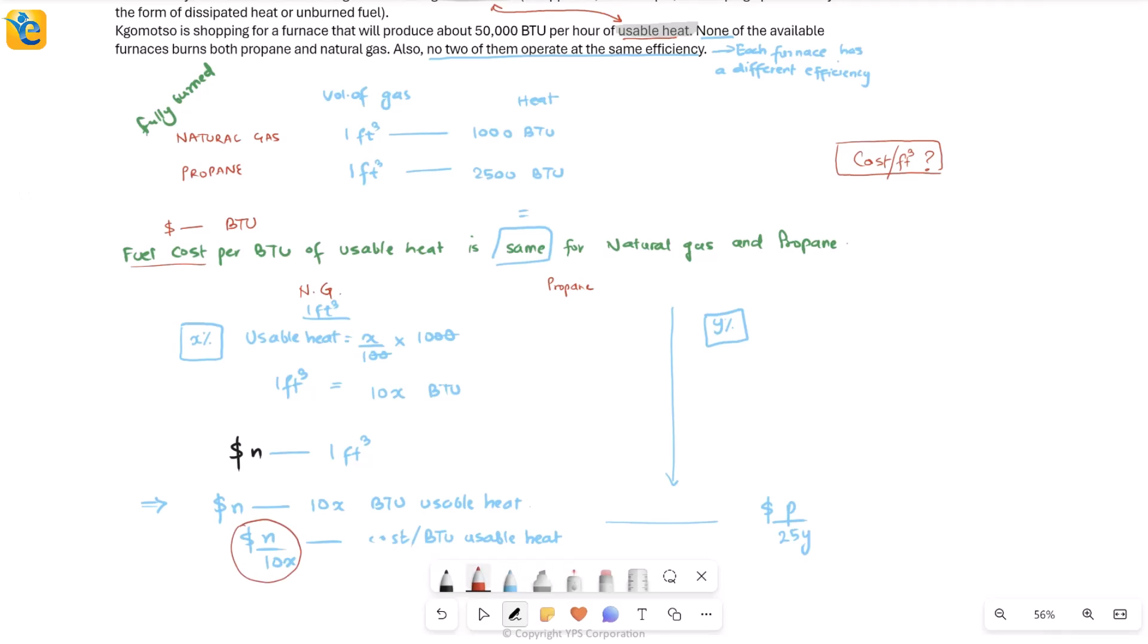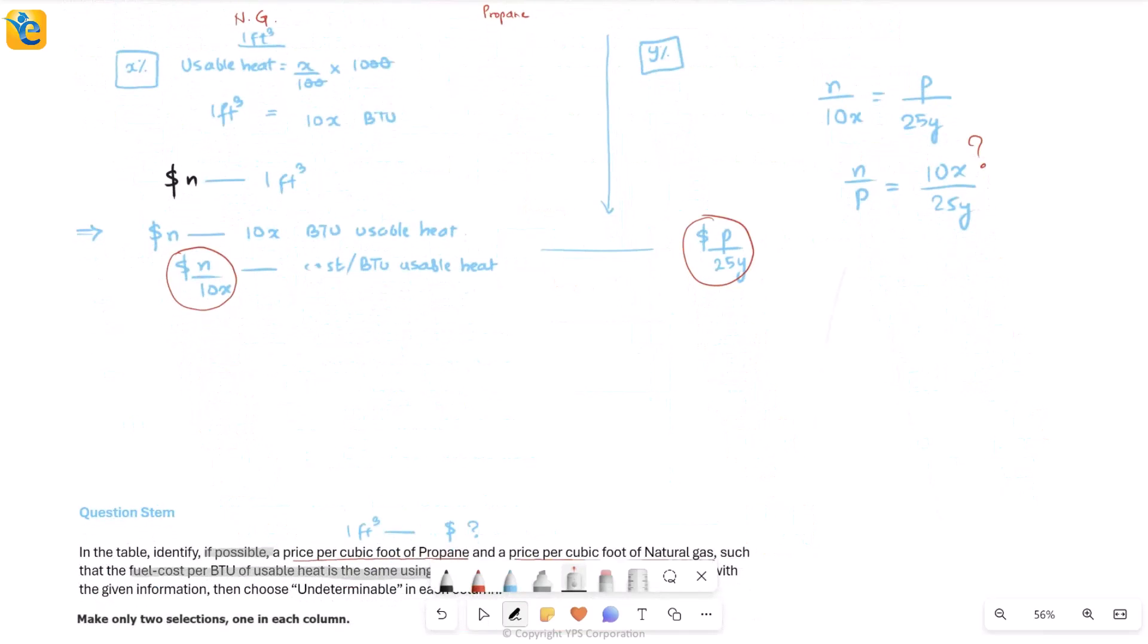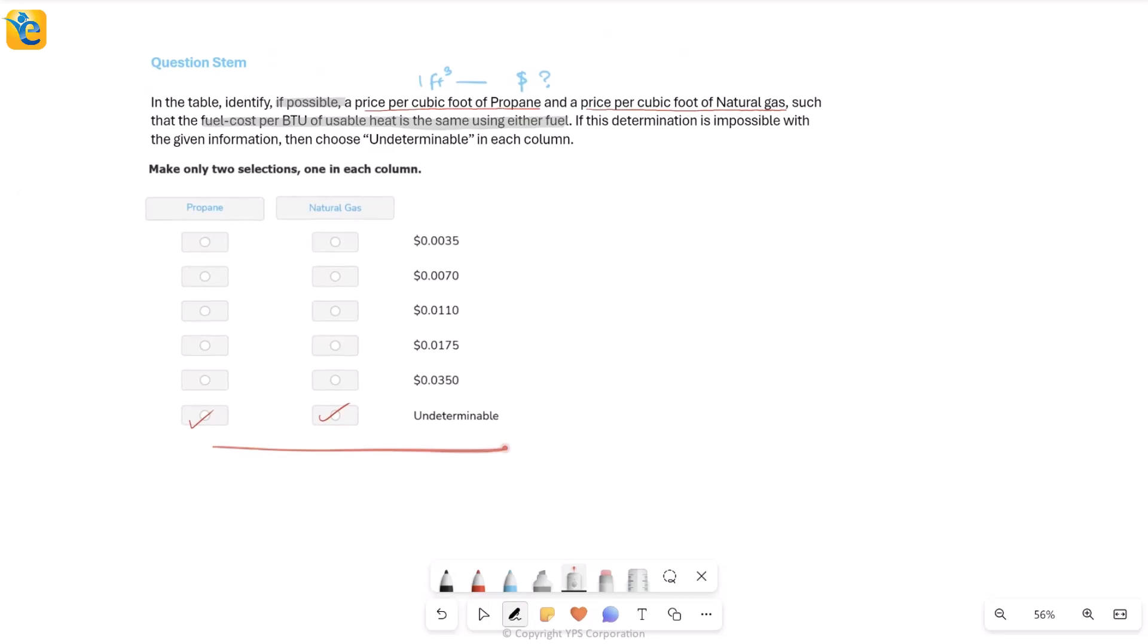These are the two values which we say are equal. That's what the statement was. It's the same for them. Even if I create an equation out of this, I really put these two equal, will that help me find N and P? Even if I can find a ratio, then I'll go in the table and see where is that ratio satisfied. But when you see a ratio also, that also depends on X and Y, the efficiencies. And there is no information I have about the efficiencies at all. So the feeling that we had, we have now proven that without efficiency, we cannot get anything about how much usable heat is generated. And so it's impossible to connect that with the cost of the fuel. So overall, this also proves that we cannot answer this question and undeterminable becomes the answer.